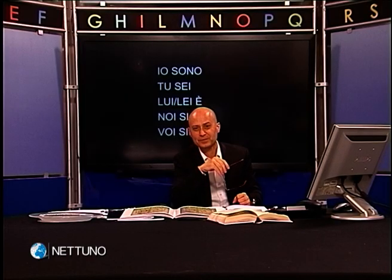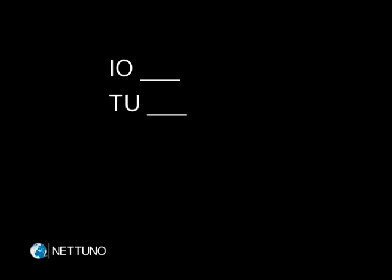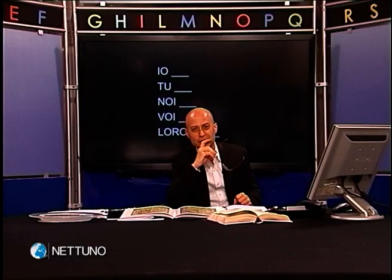Ecco il secondo esercizio: inserite nello spazio vuoto le forme del presente del verbo avere che mancano. Io, tu, noi, voi, loro. Ed ecco le soluzioni: io ho, tu hai, noi abbiamo, voi avete, loro hanno.